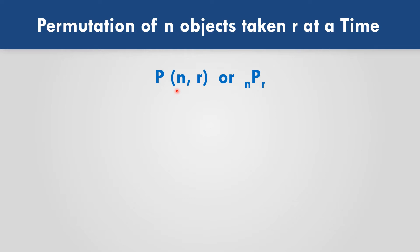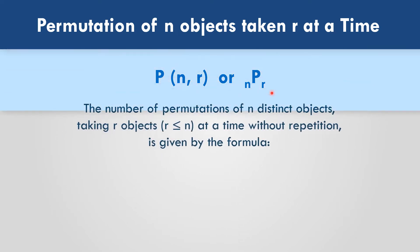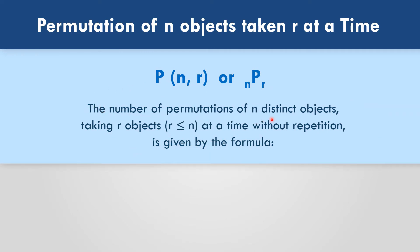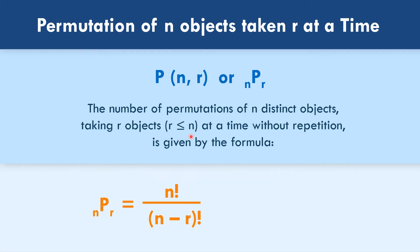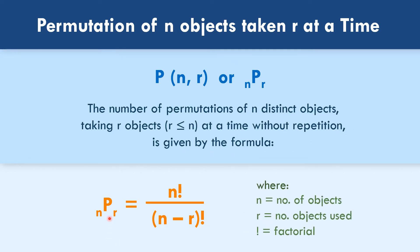P(N, R) — permutations of N objects taking R at a time. The number of permutations of N distinct objects taking R objects, where R is less than or equal to N, at a time, without repetition, is given by the formula: N factorial all over the quantity N minus R factorial. Here N is the number of objects, R is the number of objects used, and the exclamation point denotes factorial.